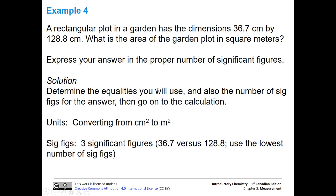Let's look at another example. We have a rectangular plot that is 36.7 centimeters by 128.8 centimeters. What's the area of the garden plot in square meters? Express your answer to the proper number of significant figures — even if the problem doesn't tell you to do that, always make sure you do. So we're going to determine what equalities we want to use and figure out our sig figs.